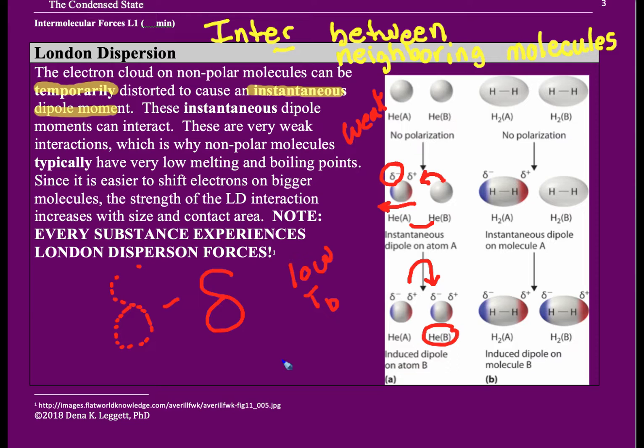Because of that, this is often called an induced dipole. The seemingly random shift of electron density from one end to the other induces the next atom to shift, and then we can have that attraction between those partial negative and partial positive forces.